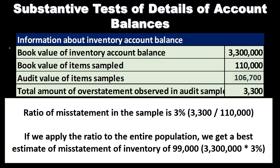Here is our example about inventory account balances. We have a book value of the total inventory account balance of $3,300,000. The book value of items selected within our sample is $110,000. When we go through our audit process, the audit value of items selected comes out to be $106,700. The difference between those two gives us a total amount of overstatement observed in the audit sample of $3,300.